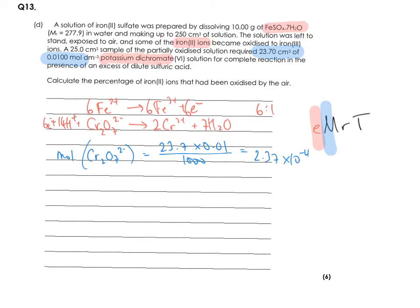Now let's use our ratio we've just worked out which was 6 to 1. So we can work out our moles of the Fe2 plus which equals 2.37 times 10 to the minus 4 times by 6. And that gives us 1.422 times 10 to the minus 3.